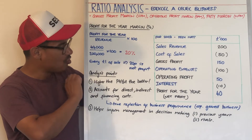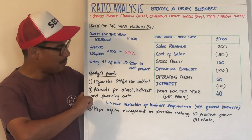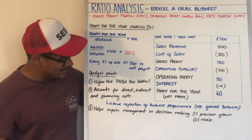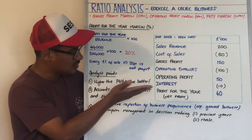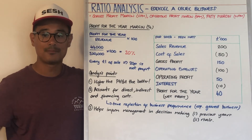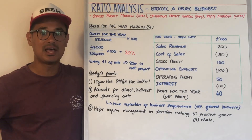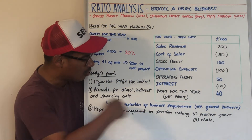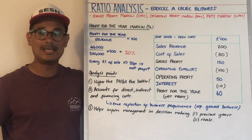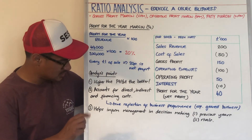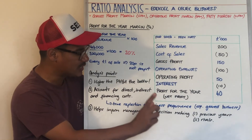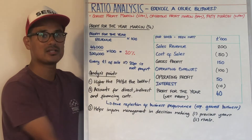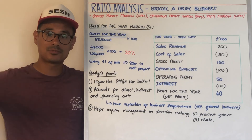The higher the profit for the year margin, the better. It now accounts for direct costs (cost of sales), indirect costs (day-to-day operating expenses), and also financing costs — interest paid on loans used to set up the business over time. That's why the profit for the year margin is a true reflection of overall business performance, especially for a highly geared business with lots of debt. As always, it helps inform management in their decision-making — comparing to previous years to track trends and comparing to rivals within the industry. Hope that helps — see you at the next session.